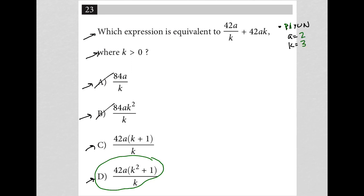I'm going to say a is 2 and k is 3. And if I need to change that to make this a nicer fraction here, I will. So if I have 42 times 2 over 3 plus 42 times 2 times 3, 42 times 2 is 84. 84 divided by 3. Let's see what that is in my calculator really quickly. 84 divided by 3 is 28.